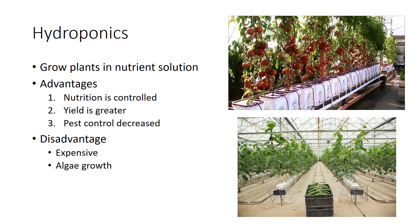The main disadvantage of using a hydroponic system is the expense, which is not economically feasible for a variety of plants. For example, hydroponically grown tomato plants generate enough revenue to justify this method, whereas growing hydroponic potato plants do not. Another disadvantage is algae growth, although this can be controlled with good management practices.